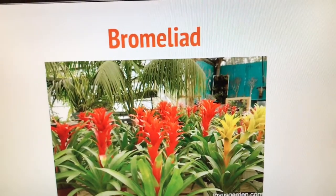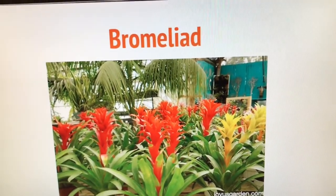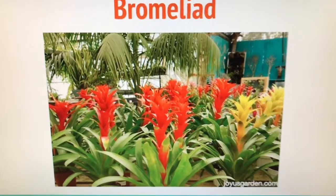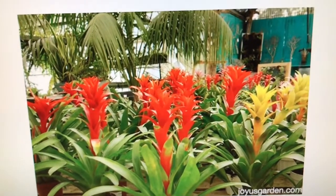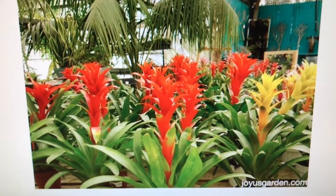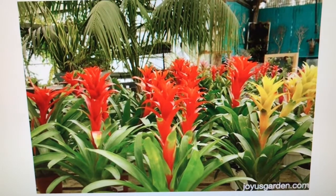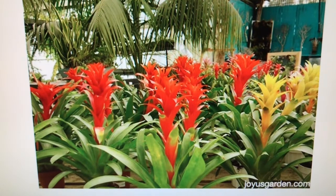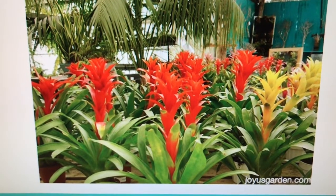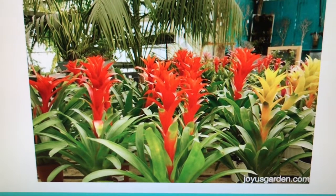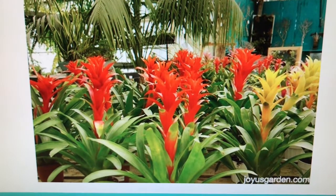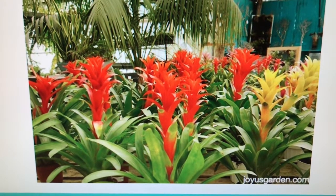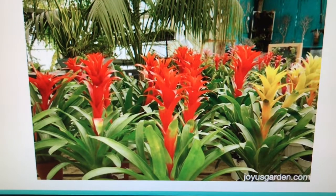These are bromeliads, I'm guessing. And again, look at the different colors you see. But look at those leaves — those leaves are exactly the same. And the flower heads are exactly the same shape.